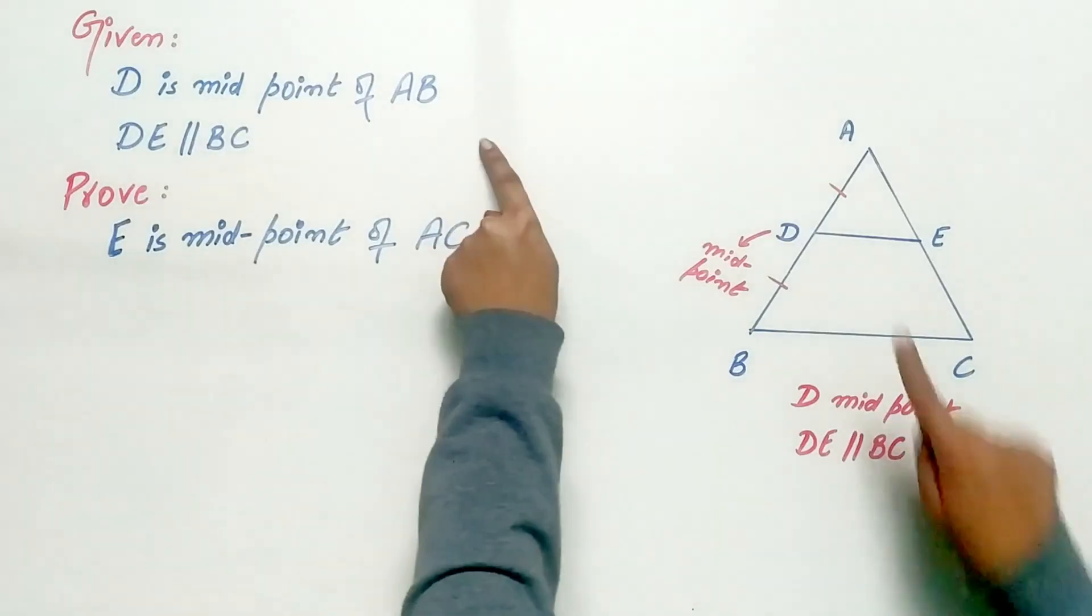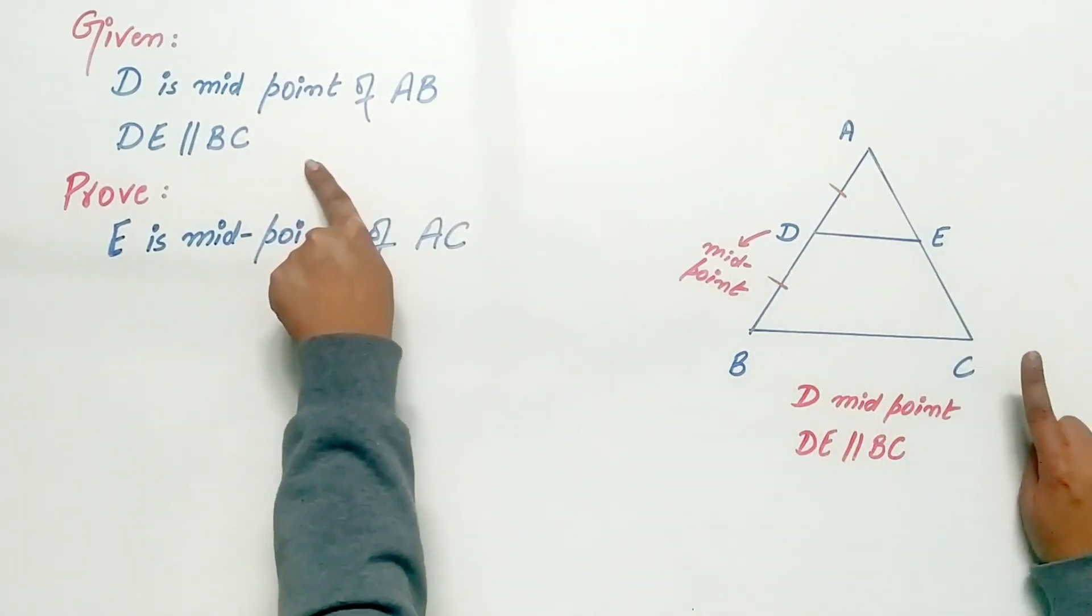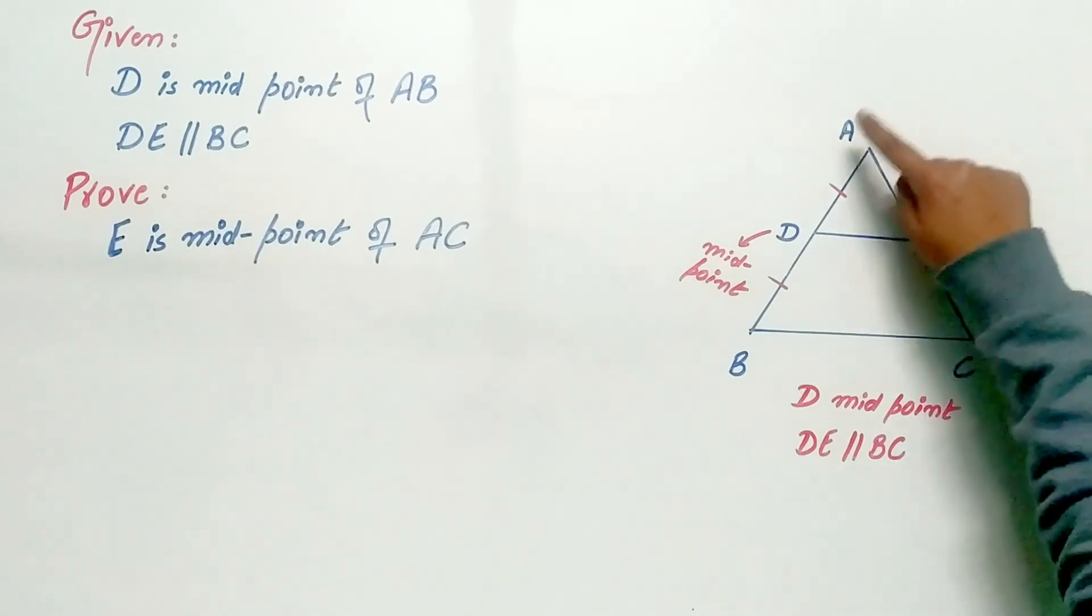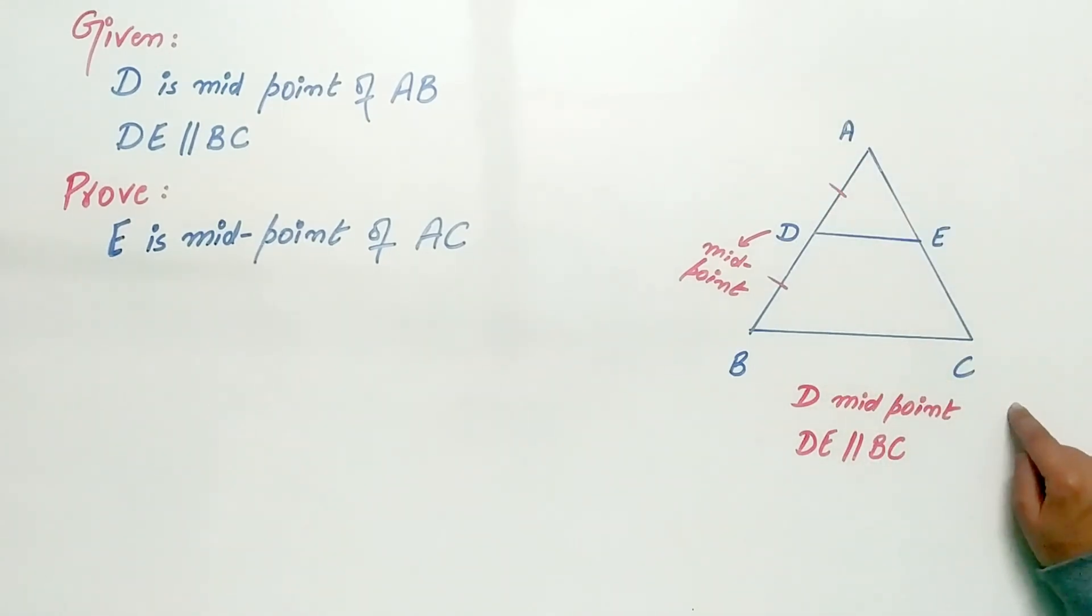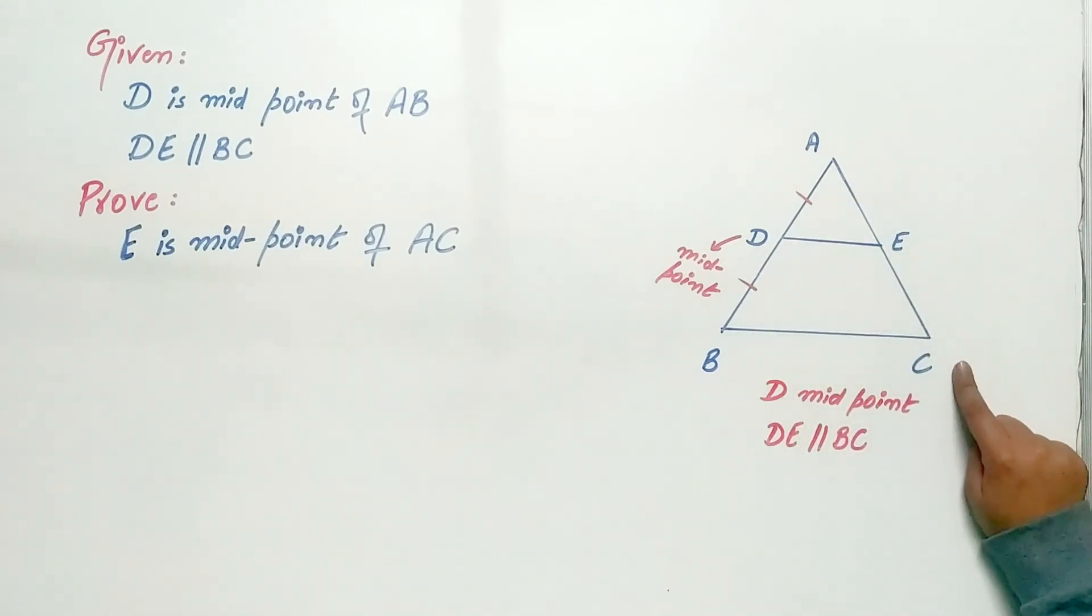It is given that D is the midpoint of AB, DE is parallel to BC. We have to prove that E is the midpoint of AC, or DE is the bisector of AC using theorem 6.1.